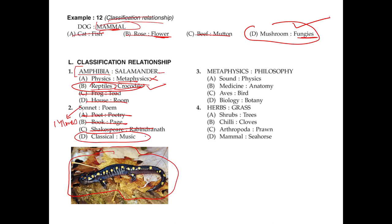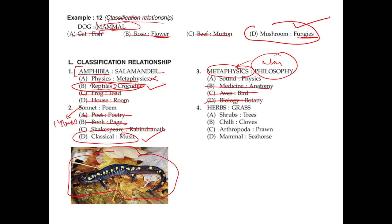Metaphysics is a part of philosophy — philosophy is the bigger picture and metaphysics is one part of it. Biology is related to humans and the body; botany is related to plants, so they have no direct relationship. Aves are the classification of birds but the sequence is not right. Medicine and anatomy: anatomy is the study of the body, not medicine. Physics and sound: sound is studied within physics — that's the right answer.